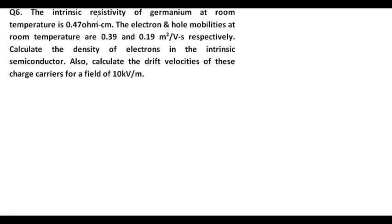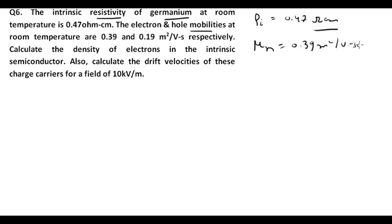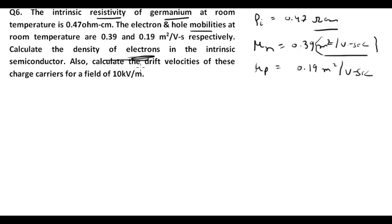Question number six: the intrinsic resistivity of germanium is given as 0.47 Ω·cm. The electron and hole mobilities are μn = 0.39 m²/V·s and μp = 0.19 m²/V·s. Calculate the density of electrons in the intrinsic semiconductor and the drift velocity for a field of 10 kV/m. Remember the SI unit for mobility — this can be asked as an objective question in the ISRO exam.